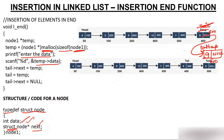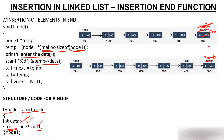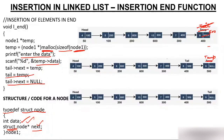Looking at this code again — temp holds address 500, and tail->next is set to temp (500), connecting the old tail to the new node. Then tail is updated to equal temp, making the new node the tail, and tail->next is set to null. So at the end, head still points to the first node, and the newly inserted node with value 9 becomes the new tail. That's how we insert a node at the end of a linked list.